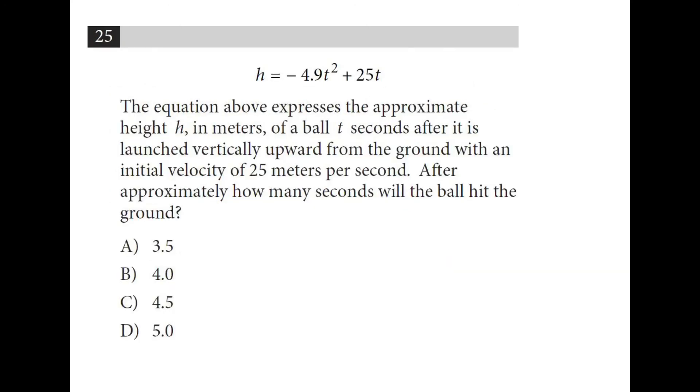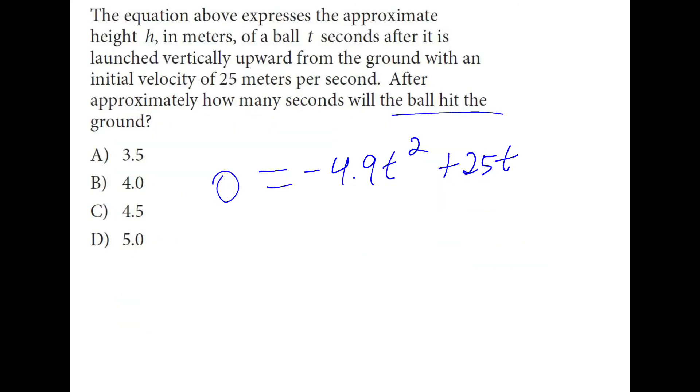After approximately how many seconds will the ball hit the ground? So the height will be 0 at that point, negative 4.9 t squared plus 25t. So if you notice, 5 squared is 25. So if we plug in 5 seconds, we're going to get 25 times 5 over here. And over here we're going to get negative 4.9 times 25, because that's what 5 squared is. And that will cancel each other out and give us 0.